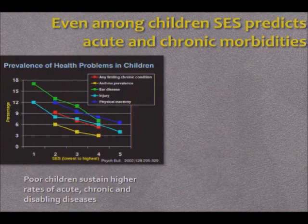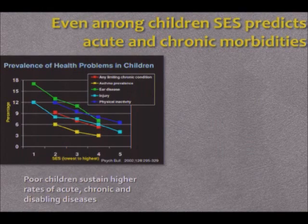This is the now iconic gradient in health, showing that even among children, socioeconomic status predicts acute and chronic morbidities.